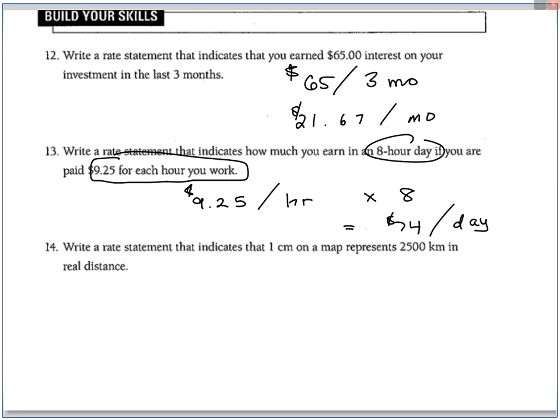The next one has to do with the scale on a map. So it indicates that there would be one centimeter for every 2500 kilometers in real distance.